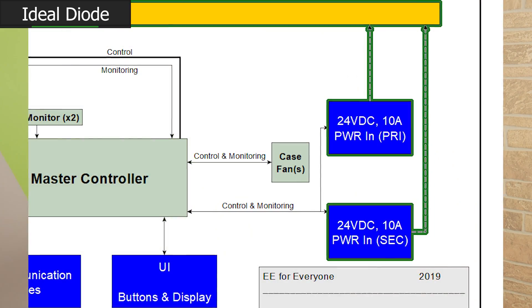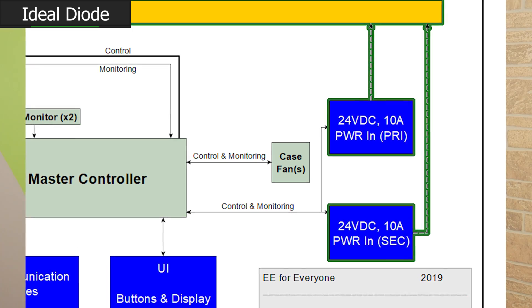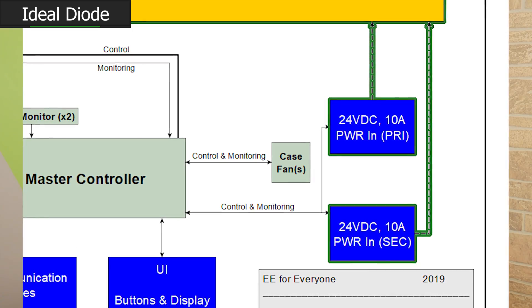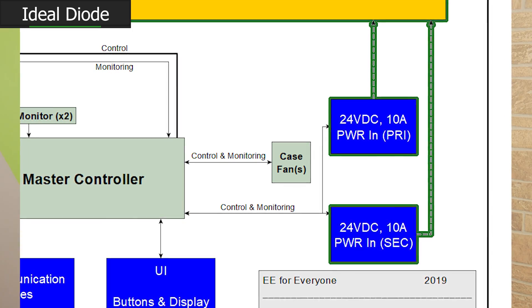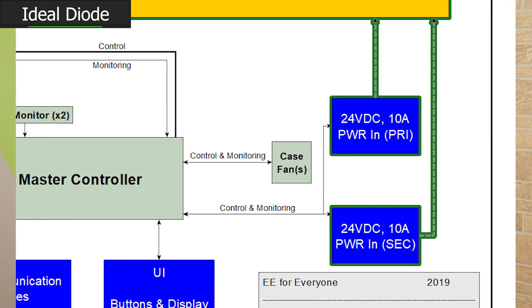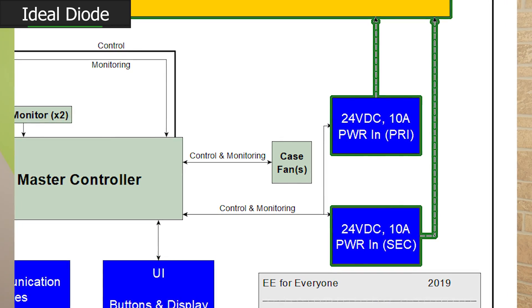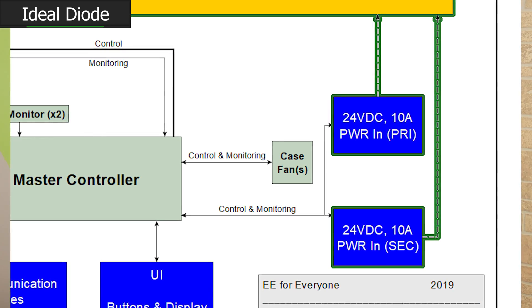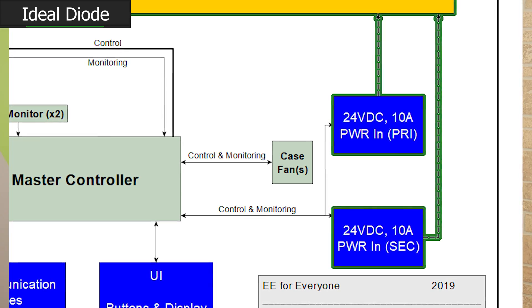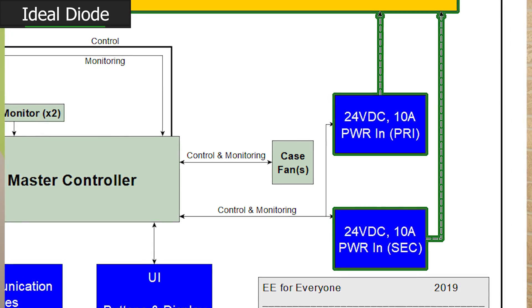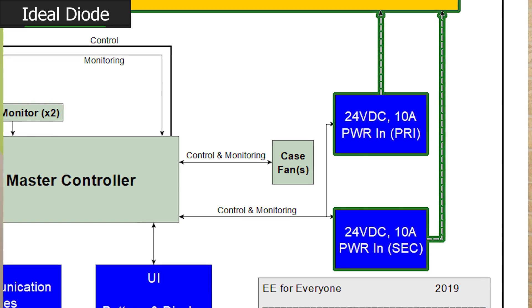Basically, we're using an Ideal Diode controller to allow for multiple redundant DC inputs. This will establish a primary DC input, typically supplied by mains, and a secondary DC input which can be supplied by alternative energy, a redundant DC supply, or a supplemental backup battery to keep the system alive even after the primary battery is discharged.